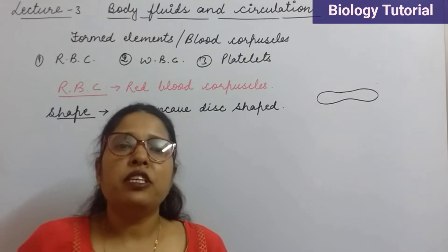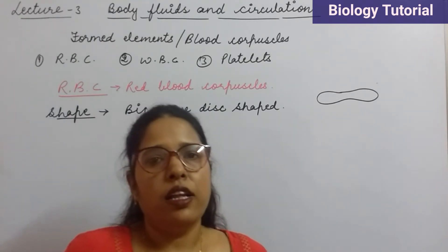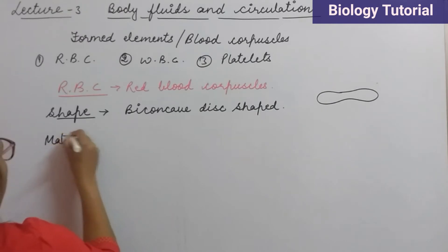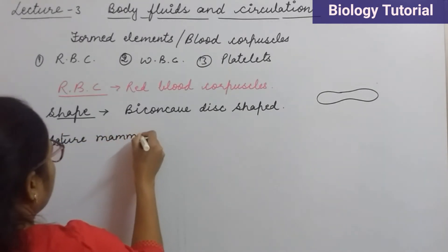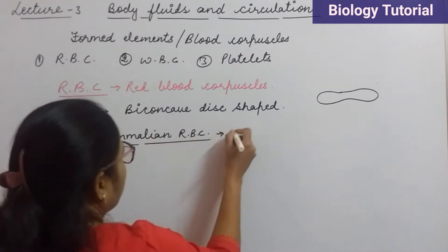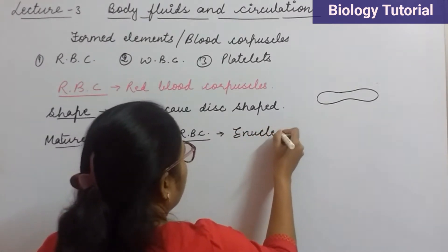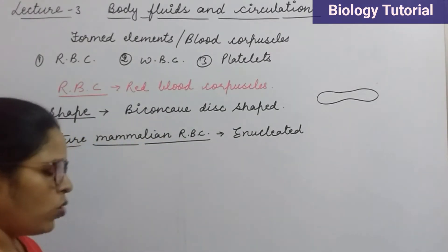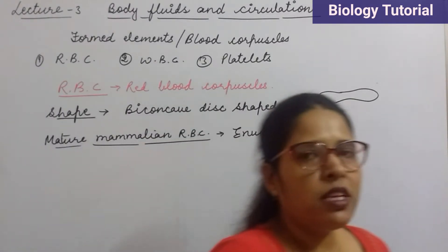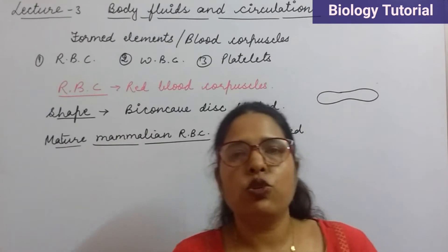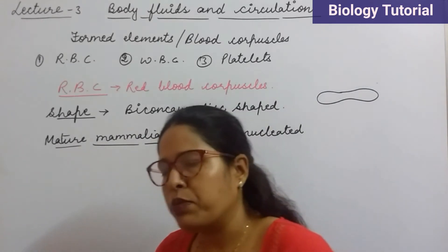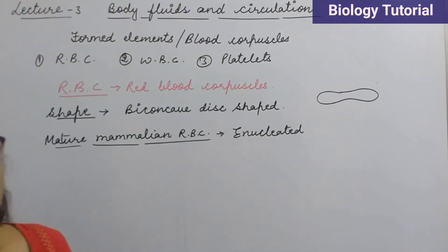One more thing: the mature RBCs of mammals are enucleated. Mature mammalian RBCs are enucleated, meaning the nucleus is absent. As the nucleus is absent, the rest of the cell organelles are also absent in the mature mammalian RBCs. In the young RBCs, the nucleus is present, but in mature RBCs the nucleus is absent and all other cell organelles are also absent.